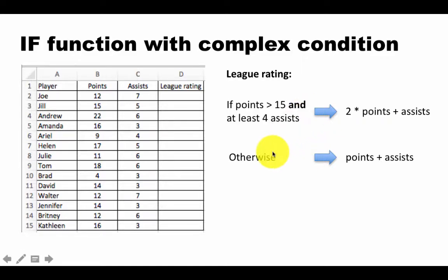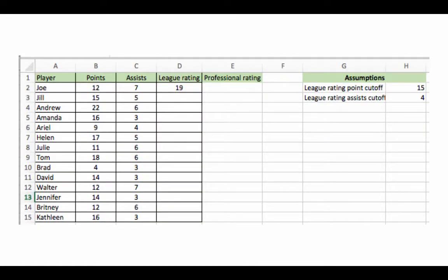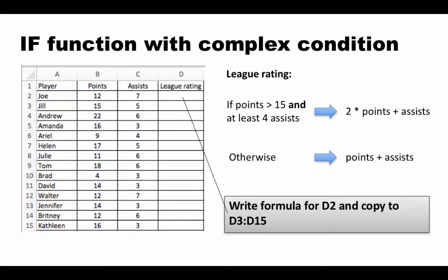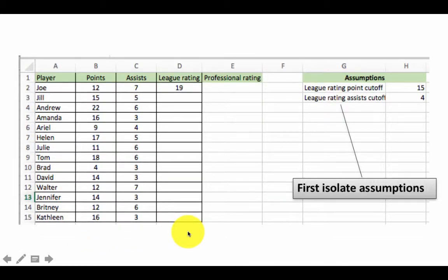Our job is to convert this into an Excel formula. We are going to say IF(condition, result if condition is true, result if condition is false). We want to write a formula for D2 and copy it to D3 through D15 — or it could be D1000. Like good Excel designers, we are going to isolate the assumptions.